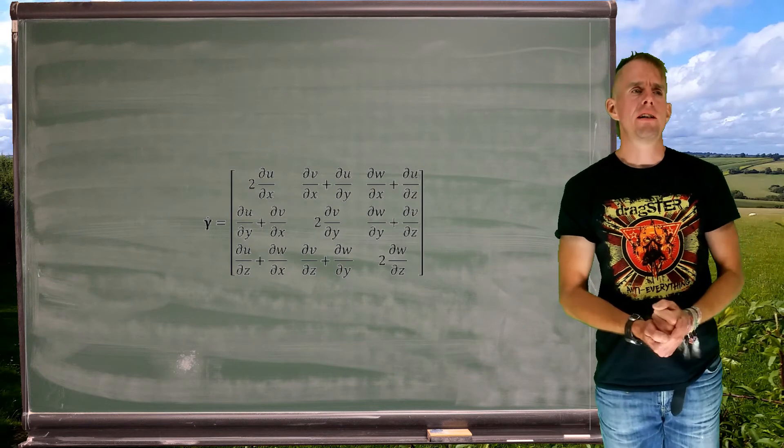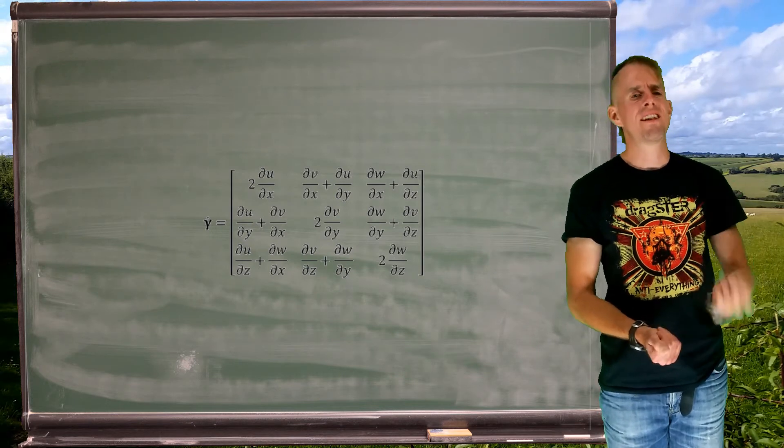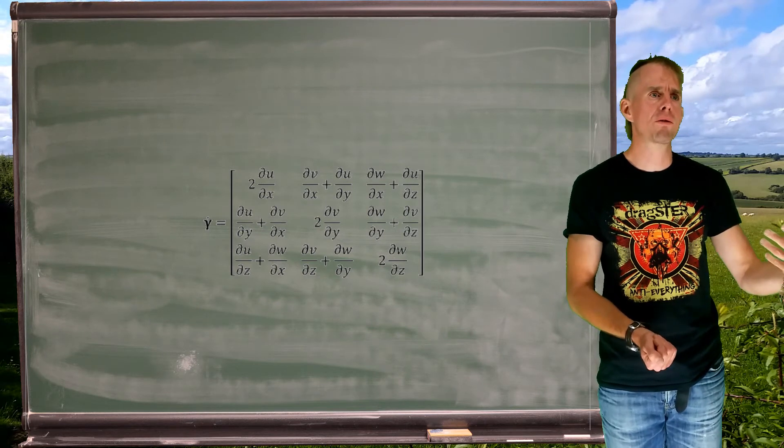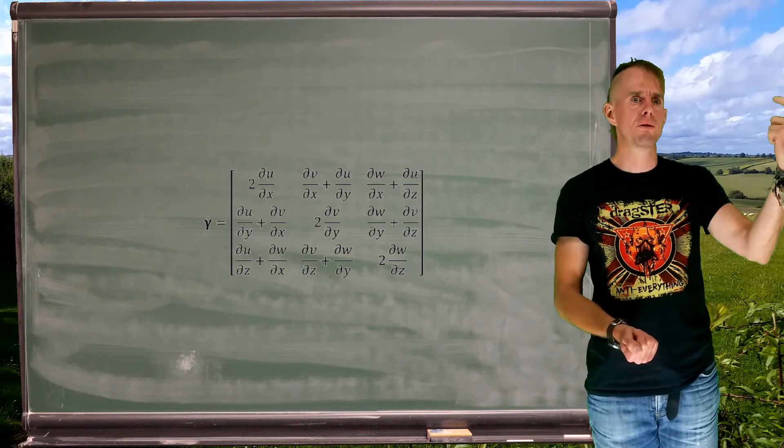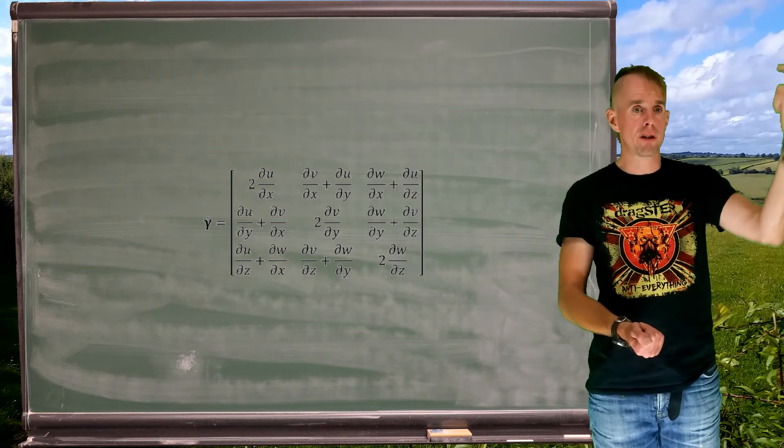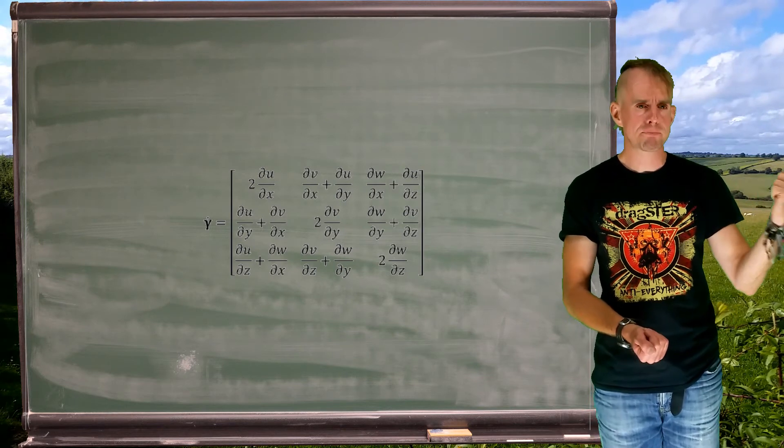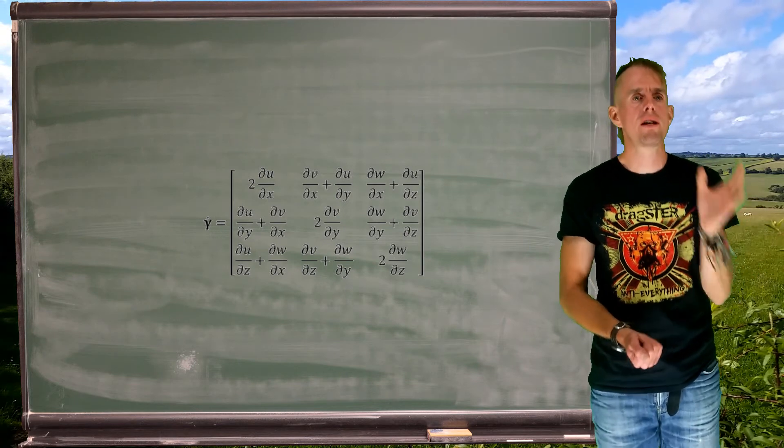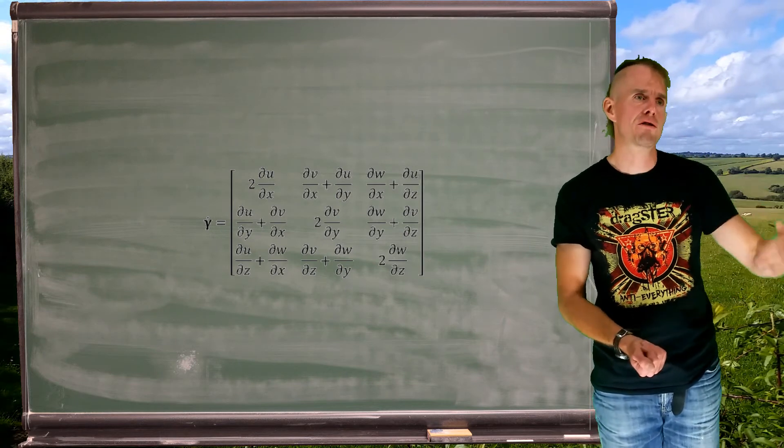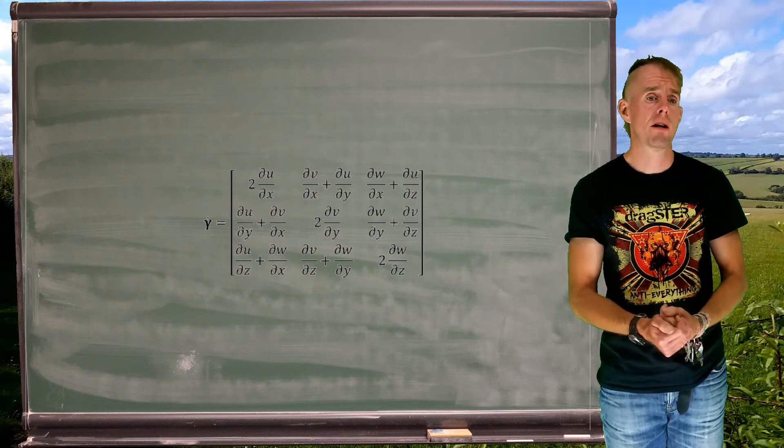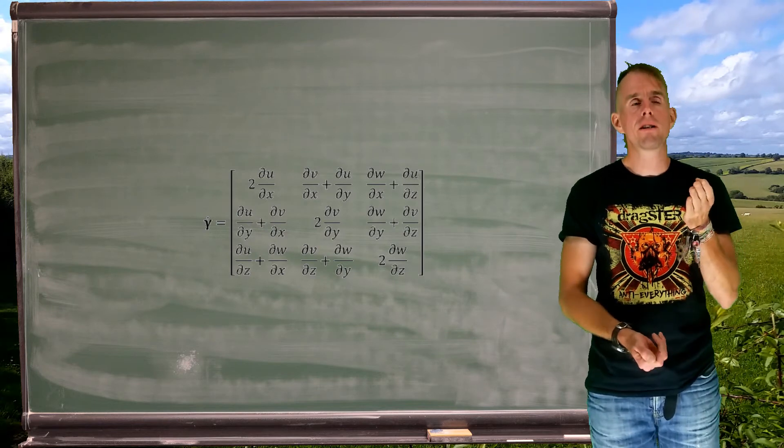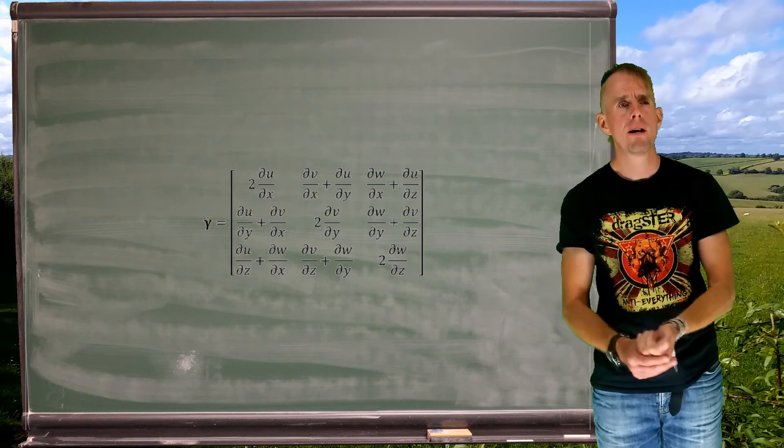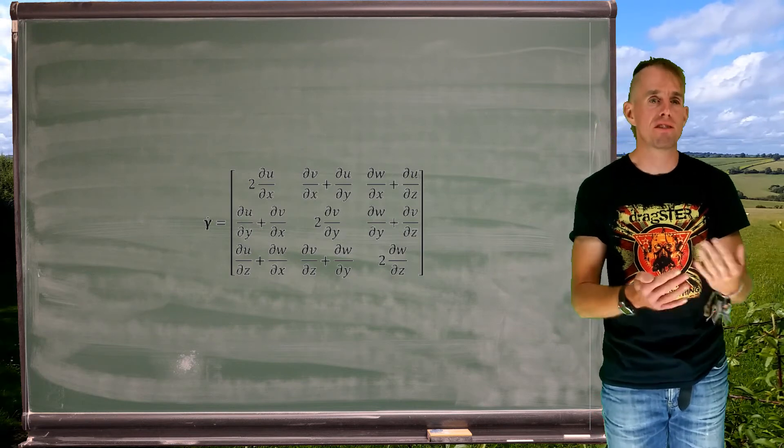Now, it's always a good idea to get a mental model of what these tensors actually mean. When we looked at the stress tensor, we saw that there was significance to non-zero components on the principal diagonal. They were normal stresses. And significance to non-zero stresses on the off diagonals in the upper and lower triangular sections. Those were shear stresses.